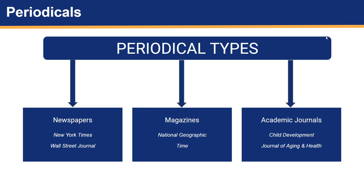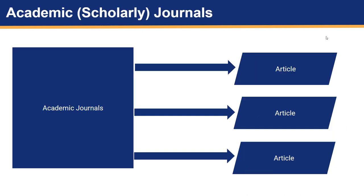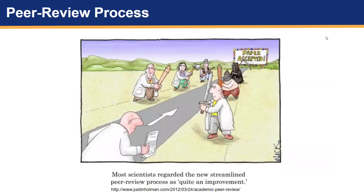While newspapers and magazines may be useful for certain situations and assignments, this presentation is focused on peer-reviewed articles in academic journals. An academic journal, also known as a scholarly journal, is a periodical intended for scholars, academics, and researchers that contain articles written by experts in a specific academic discipline. Many academic journals, but not all, are peer-reviewed.